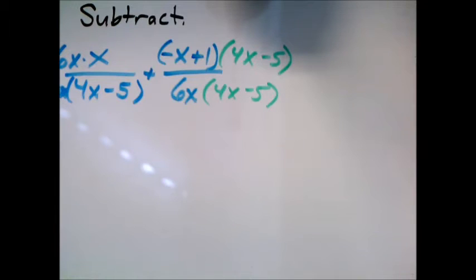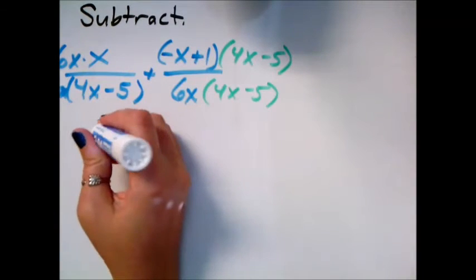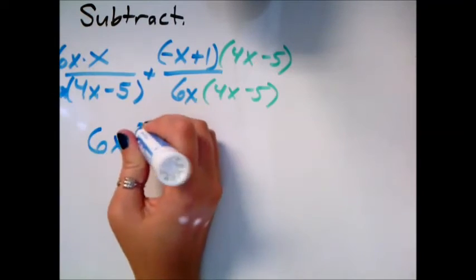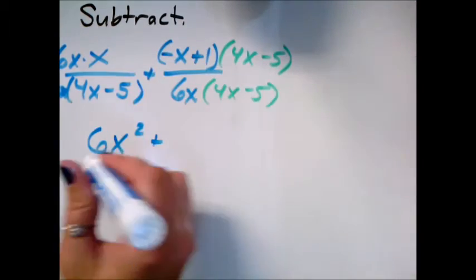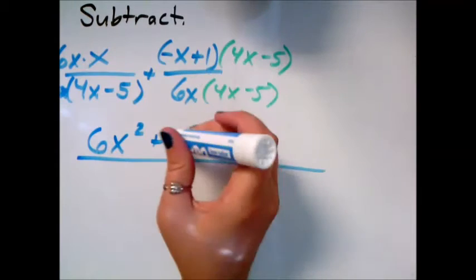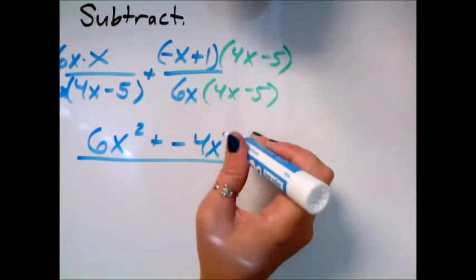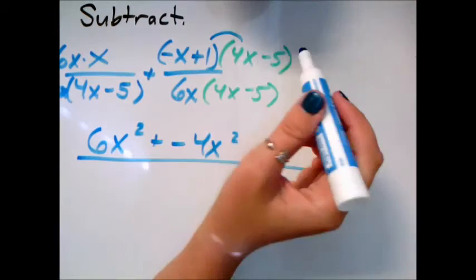That way it'll be less likely to get forgotten about later when I have to start foiling. So here on the top of this one I'm going to have 6x times x, so 6x squared, and then plus what I get when I foil these two together. So first term is negative 4x squared.